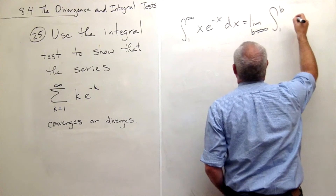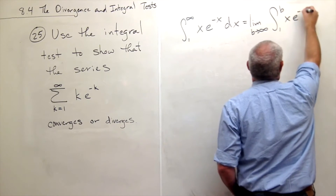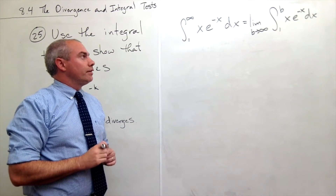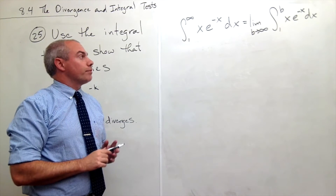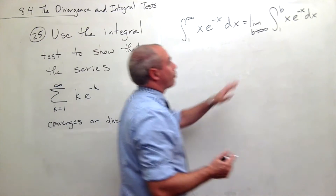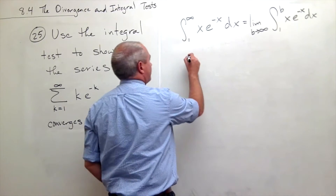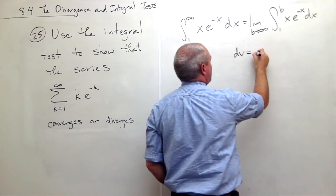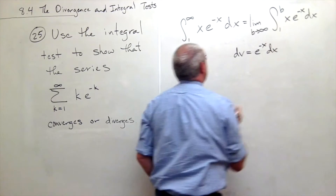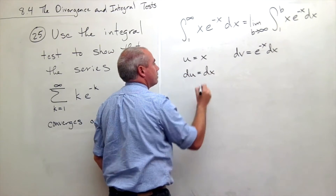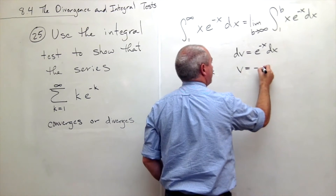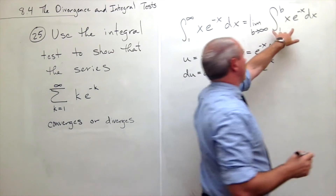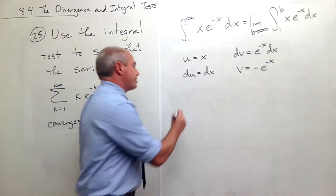The next question is how do I deal with this kind of integral, and I think integration by parts is going to help us out. So let's break this integral up into parts. I'm going to let u equal x and dv be everything else, which is e to the minus x dx. So du would be dx and v would be negative e to the negative x.